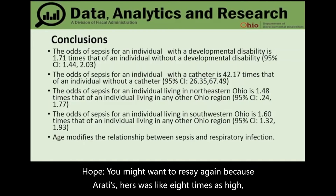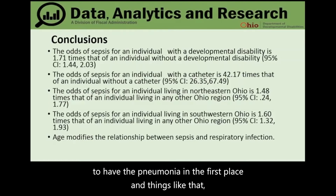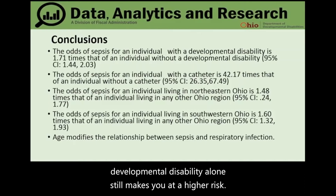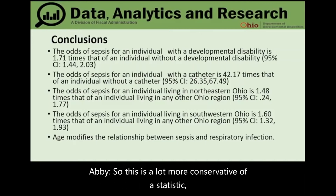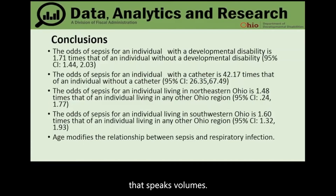It's worth noting that a prior unadjusted analysis showed about eight times higher odds, but that was without controlling for anything. The current model controls for factors like the higher likelihood that DD individuals have pneumonia in the first place. So the 1.71 odds ratio is a much more conservative and controlled statistic. With both statistics being significant, that speaks volumes.